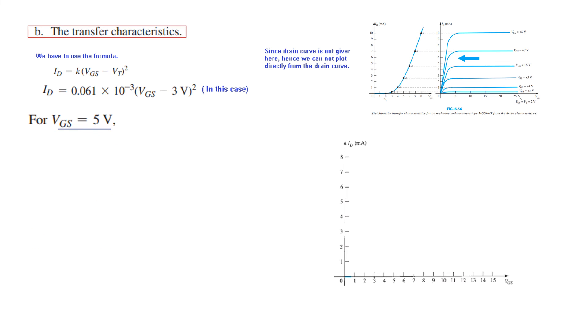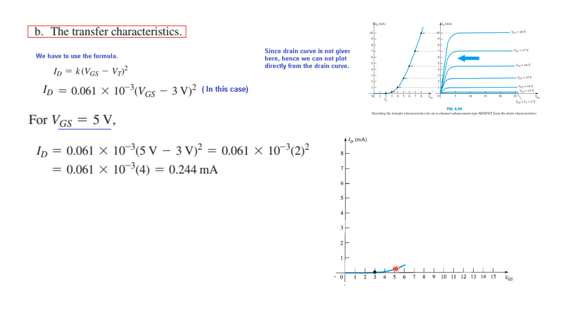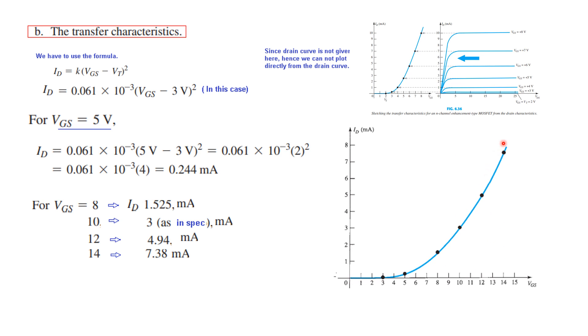So let's say VGS is 5 volts. Why we are taking 5 volts? Because generally if you can see from here, after 5 volts the saturation region starts. So we will start from 5 volts. So plugging in 5 volts here, the current will be 0.244 milliamperes. And similarly for 8 volts, 10 volts, 12 volts and 14 volts, we can calculate all these values and plot it here as shown. So this is the transfer characteristics curve for this example. So I hope this has given you an understanding what is transfer characteristics curve and how we can plot for enhancement MOSFET.